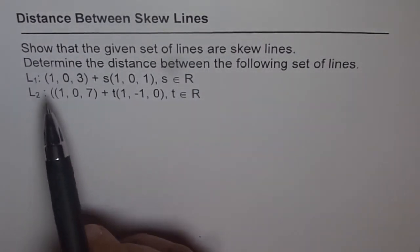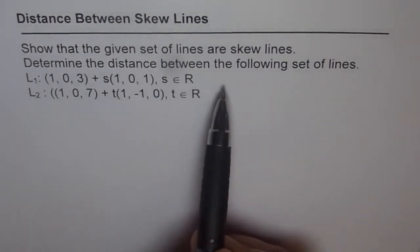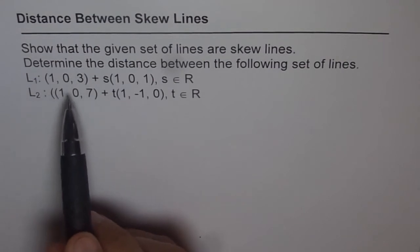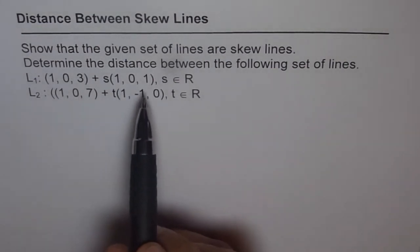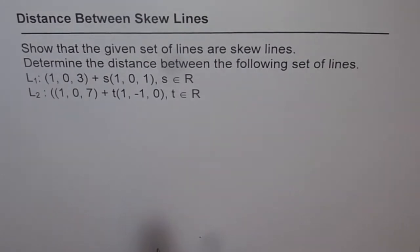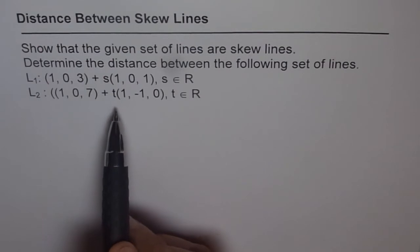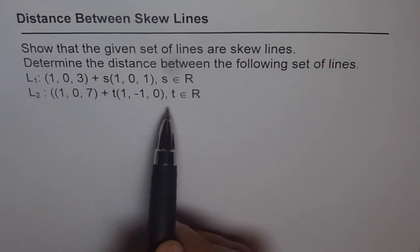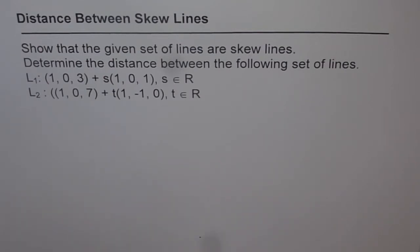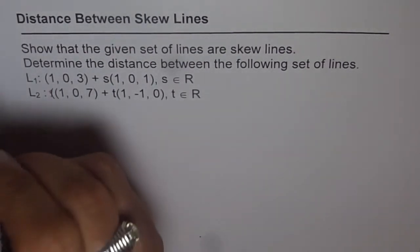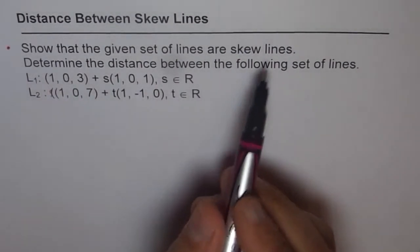Part B of this question is to determine the distance between the following set of lines. Lines given to us are L1: (1,0,3) + s(1,0,1), where s belongs to the real numbers. And line 2 is (1,0,7) + t(1,−1,0), where t belongs to R. T and S are parameters for these given equations of lines, and we are given a point and their direction numbers.